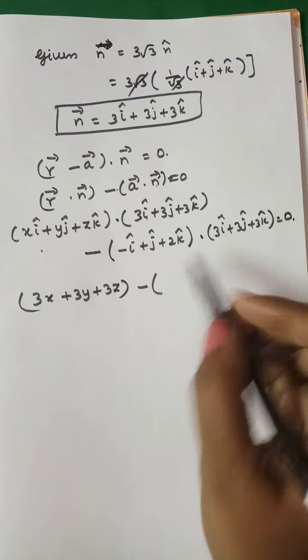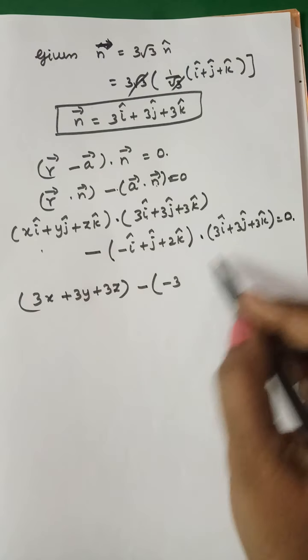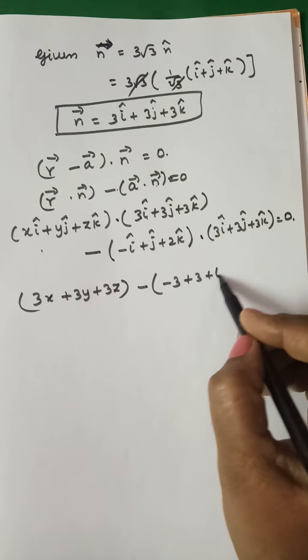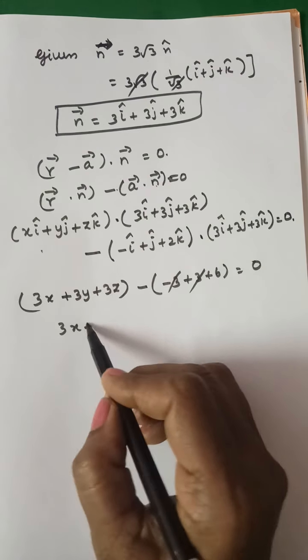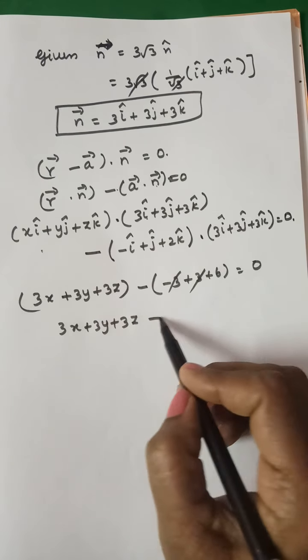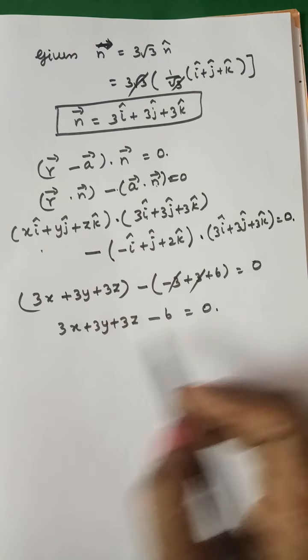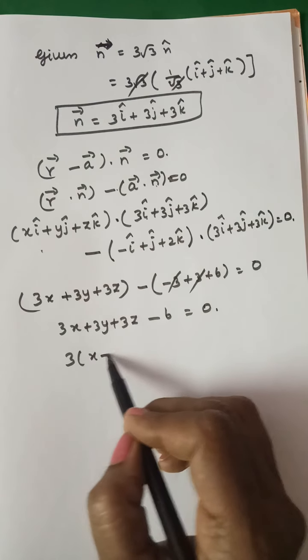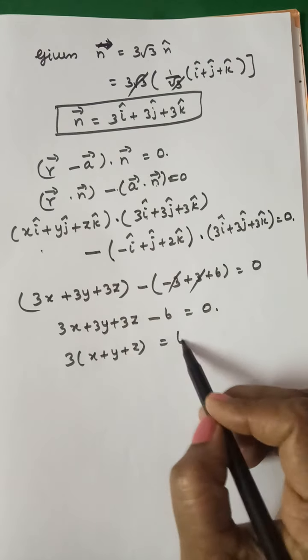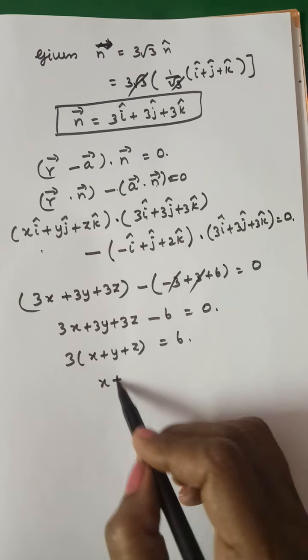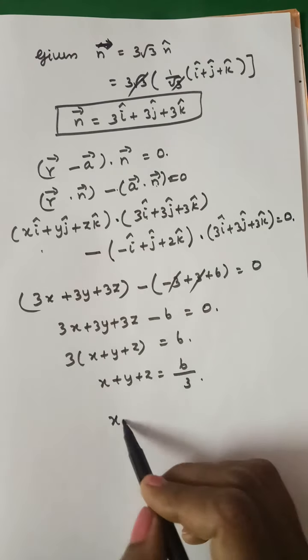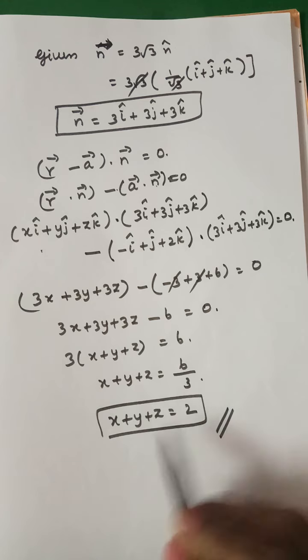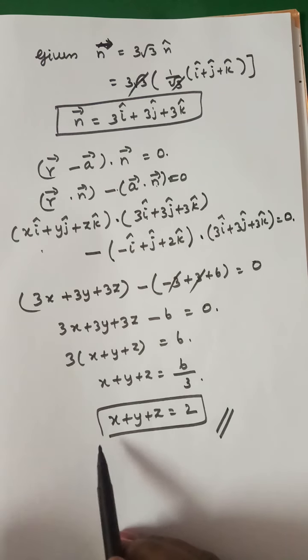Minus A·N gives: -(-3) + 3 + 6 = -3 + 3 + 6 = 6. The -3 and +3 cancel, giving 3x + 3y + 3z - 6 = 0. Dividing by 3: x + y + z = 2. This is the Cartesian equation of the plane.